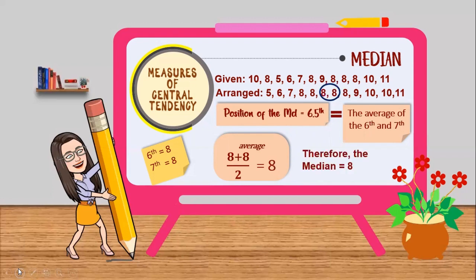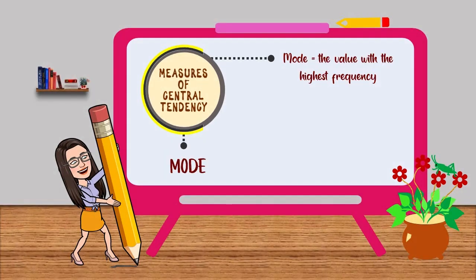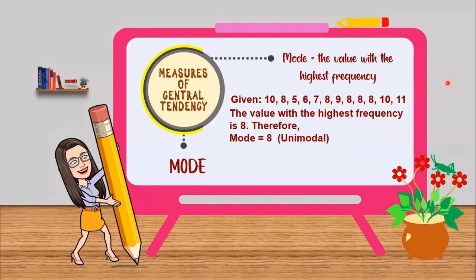Next measure of central tendency is the mode. Mode equals the value with the highest frequency. Going back to the given, let's take a look what value appears most. What value appears frequently?